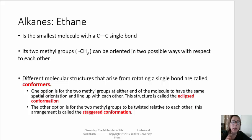The simplest alkane with a carbon-carbon bond is known as ethane, and we can think of ethane as two methyl groups connected to one another. Carbon-carbon single bonds can rotate around each other, and this allows for different orientations of the molecule, which are known as conformers. So conformers are the result of rotation around a single bond.